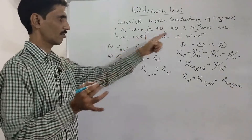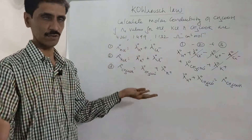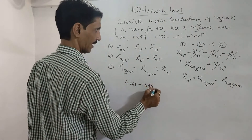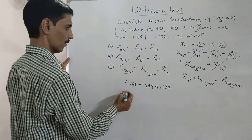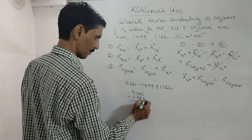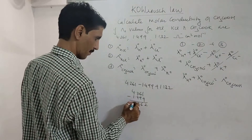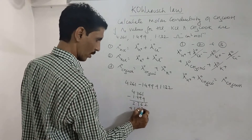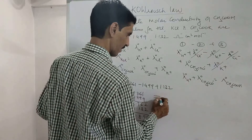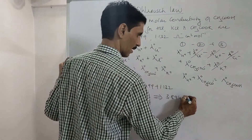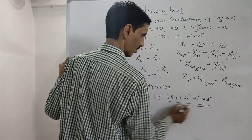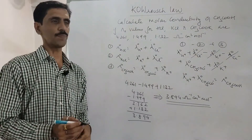Now substituting the numerical values: λ⁰(CH₃COOH) = 4.261 − 1.499 + 1.132. First, 4.261 − 1.499 = 2.762, then 2.762 + 1.132 = 3.894. So the final answer is 3.894 ohm⁻¹ cm² mol⁻¹. I hope you have understood this numerical.